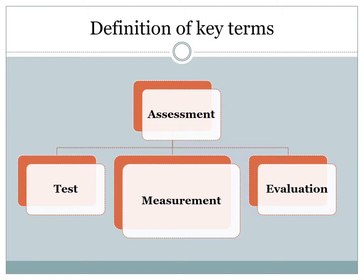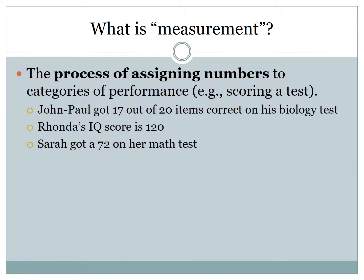Now let's talk about measurement. Just as test is under assessment, measurement is also under assessment. Measurement is the process of assigning numbers to categories of performance — that is, scoring a test. So you might give a test with 20 items and a student gets 17 out of 20. On an IQ test, a student might score 120; Sarah might get a 72. You might grade a project and say that student has an A. In kindergarten, it can also be as simple as: can the student perform the skill — yes or no, can the student tie their shoes? A measurement is any time a number or category is assigned to measure whether a student can do something.